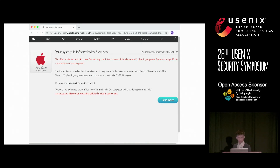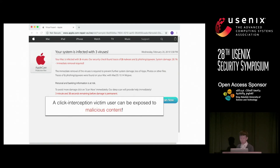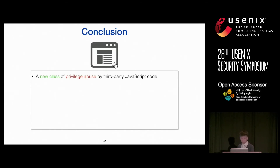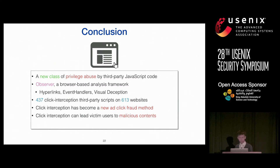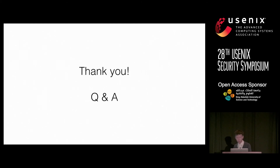We also saw landing pages where users are tricked into visiting fake antivirus websites. Users who fall victim to click interception may be exposed to malicious content. To conclude, we studied a new class of privilege abuse by third-party JavaScript, implemented a system called Observer, and found more than 400 click interception scripts on 600 websites. We find this kind of attack is being used as a new way to commit ad click fraud, and users may be led to malicious content — but we can extend the system to stop them.